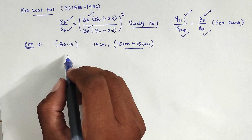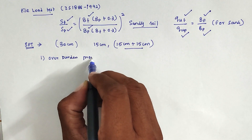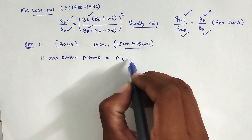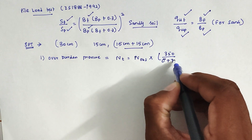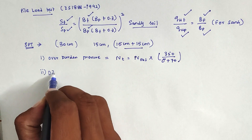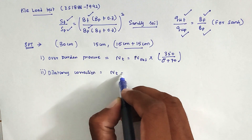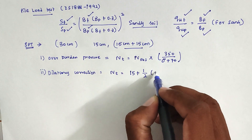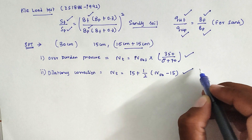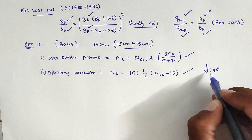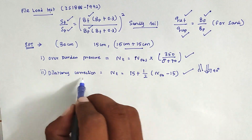There are two corrections in SPT. First, overburden pressure correction: N_corrected = N_observed × 350 / (σ̄ + 70). Second, dilatancy correction: N_corrected = 15 + 0.5 × (N_observed − 15). Overburden correction is due to heavy load on the soil. Dilatancy correction accounts for the sampler not being held perfectly vertical at 90 degrees.